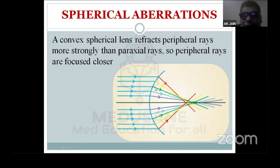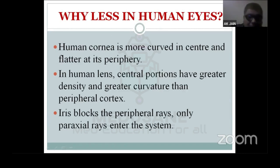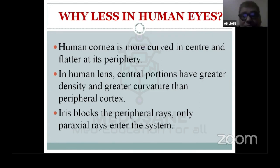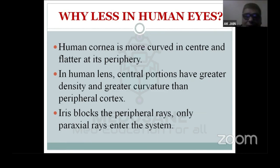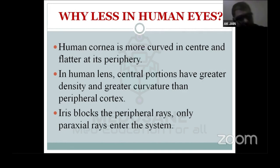The crystalline lens also compensates for spherical aberration: the central nuclear portion has greater density (RI 1.41) and greater curvature, refracting central rays appropriately. Additionally, the iris blocks peripheral rays entirely, so only the well-focused central rays reach the retina. These three mechanisms — corneal asphericity, lens nuclear density, and iris — work together to minimize spherical aberration in the human eye.